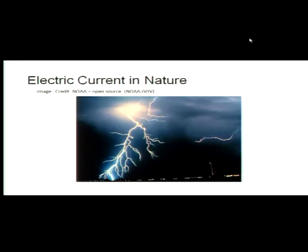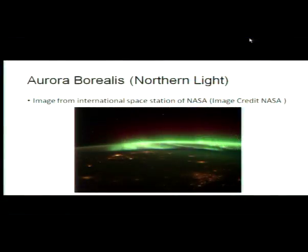Another natural occurrence of current with beautiful consequences is the aurora. The sun emits gases and particles that move toward space at fairly high speed, and part of these reach Earth's atmosphere. At higher altitudes, they ionize things and circulate in the region known as the ionosphere. This current creates beautiful sights known in the northern hemisphere as aurora borealis, or the northern lights, and in the southern hemisphere as aurora australis, or the southern lights.